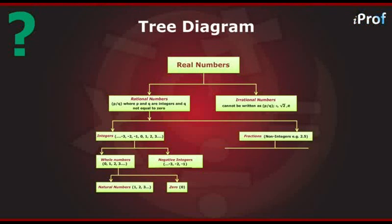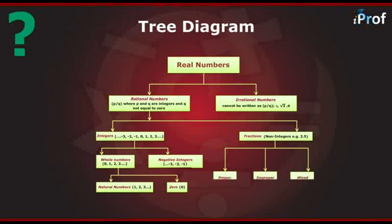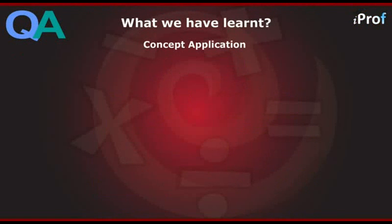Fractions are of three types: proper fractions, mixed fractions, and improper fractions. Let us apply some of the concepts we have already learnt. We already know that recurring decimals are rational numbers; that is, they can be expressed in the form P divided by Q. Let us see how we can do that.